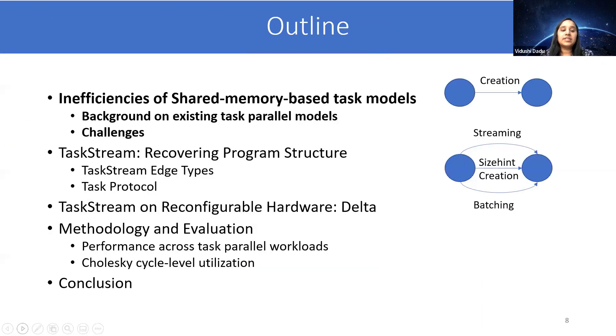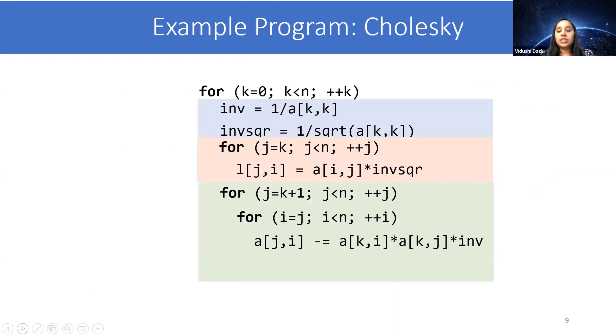In this talk, I will first discuss the inefficiencies of shared memory-based task models, and then describe our solution for TaskStream, which is a novel program representation to exploit the lost program structure. And then we discuss how TaskStream is implemented on reconfigurable hardware. And then I will go over the evaluation and conclude. I will use Cholesky as a driving example during this talk to motivate our proposals. So here is the pseudocode of Cholesky where there is an outer loop and several computations are being performed. You do not need to understand the pseudocode as I will go over the computations and dependencies later.